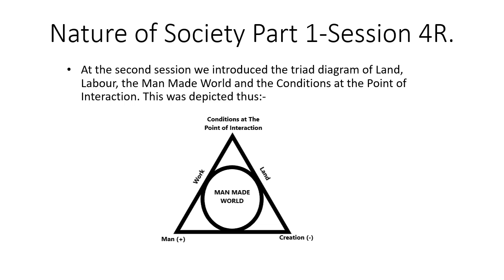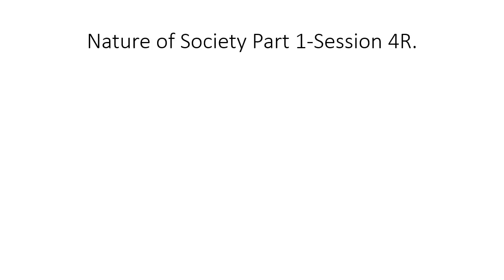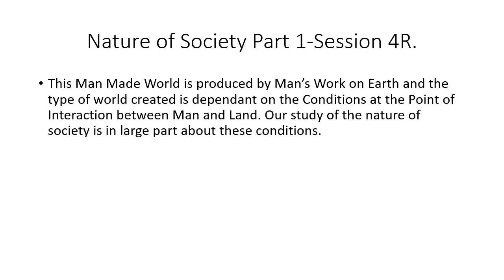This was depicted in the diagram here: the man-made world is produced by man's work on earth, with the conditions at the point of interaction producing the man-made world. The type of world created is dependent on the conditions at the point of interaction between man and land. Our study of the nature of society is in large part about these conditions.